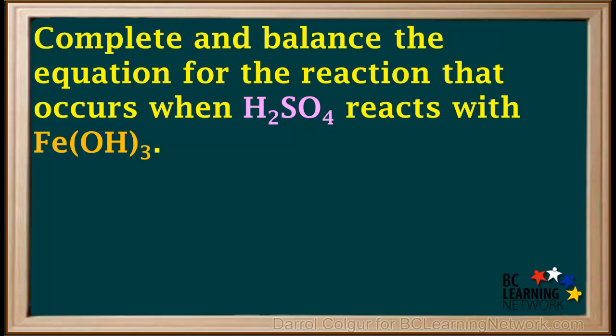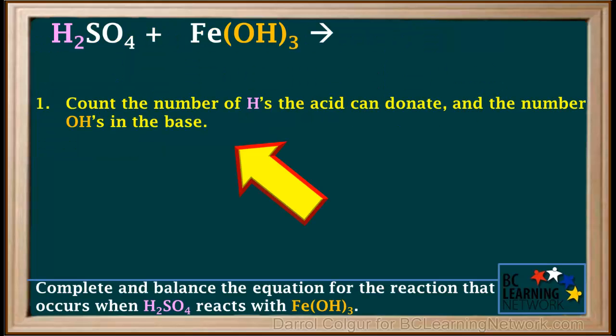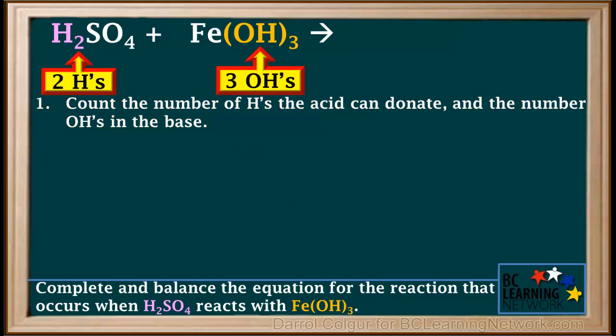Here's another example. We're asked to complete and balance the equation for the reaction that occurs when H₂SO₄ reacts with Fe(OH)₃. We'll write down the given formulas of the reactants and count the number of H's in the acid and the number of OH's in the base. We have two H's in the acid, H₂SO₄, and three OH's in the base, Fe(OH)₃.